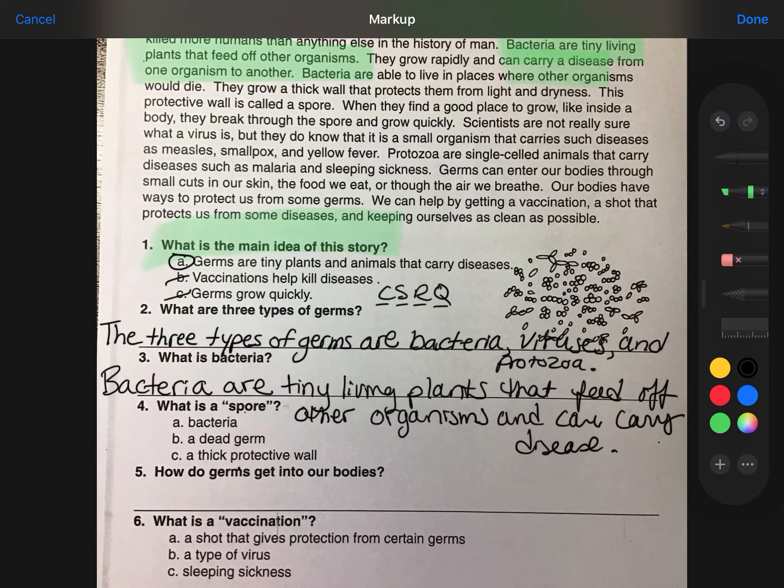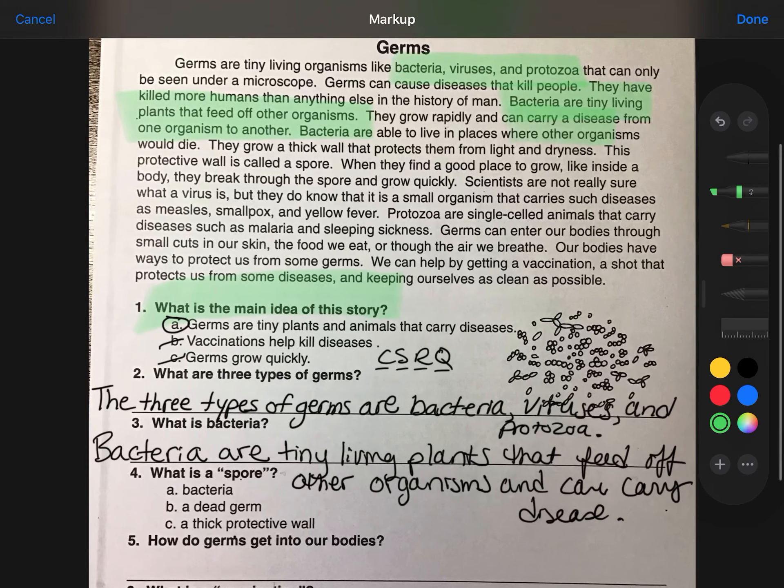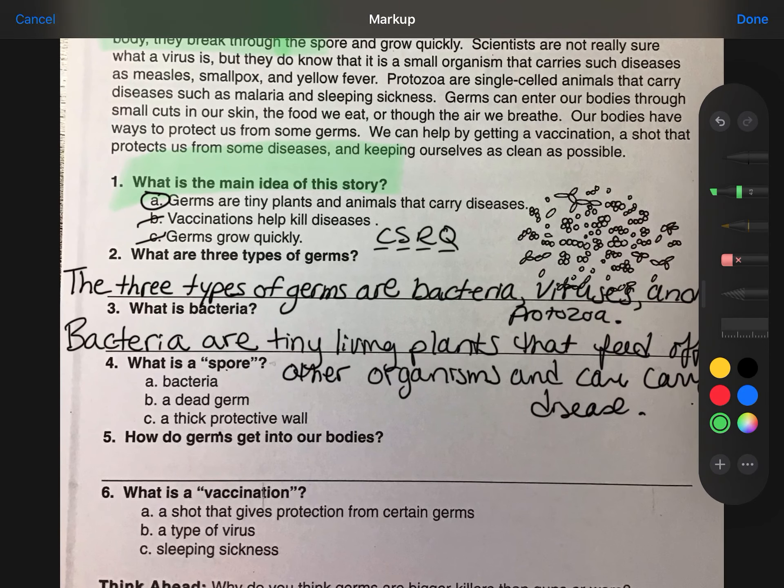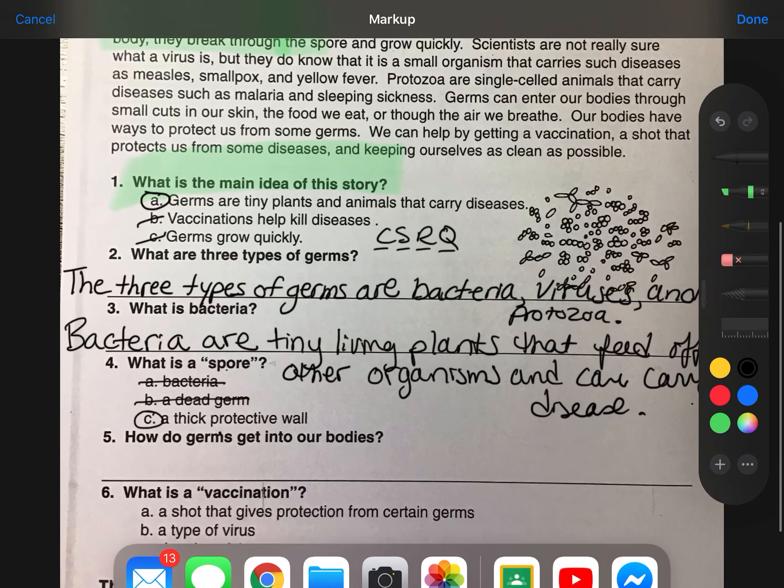What is a spore? Let's see, I see the word spore here. They grow a thick wall that protects them from light and dryness. This protective wall is called a spore. So, not bacteria, not a dead germ. It's a thick protective wall.